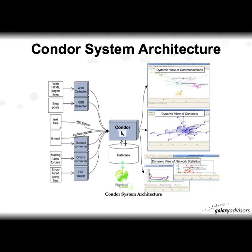The overall Condor system architecture looks like this: Condor is software with various tools and web forms that collect data from the web, email, Wikipedia, Twitter, Facebook, video, and more. It's all stored on your computer in a MySQL database. You can use NaviCat — a graphical user interface software — to query that database and view the tables and variables. Condor's output is dynamic or static network views, mapping not only network connections but the content within them, along with network statistics updated dynamically.